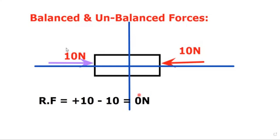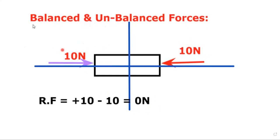When the resultant force is 0N, then we simply say this force is balanced by the other force — this is called a balanced force. By Newton's second law, we know that F = ma.